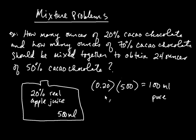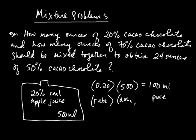What we're basically talking about is multiplying the percent by the amount to get the amount of pure substance. We're going to refer to the percentage as the rate. So: rate times amount gives you pure — the amount of pure substance. With that in mind, let's go ahead and tackle our mixture problem.